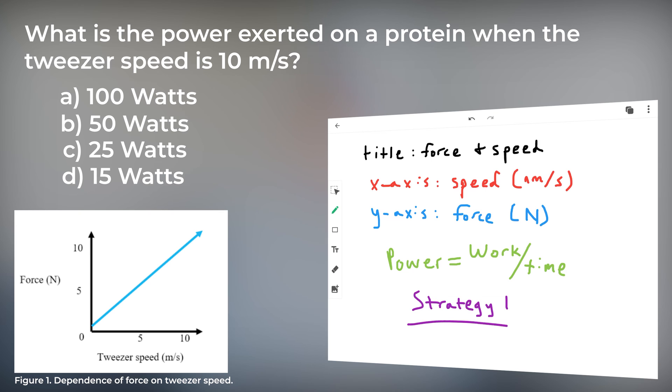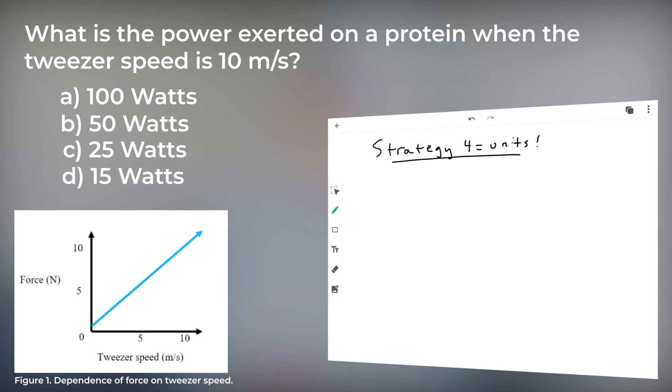You look at the graph, however, and there is no work over time, but don't panic. Here, MCAT physics strategy 4, or using the units to your advantage, kicks in, and you can break down the units that you do have. Power is equal to work over time, and the units are joules per second. We know that the equation for work is force times distance, and force is represented by newtons, while distance is represented by meters.